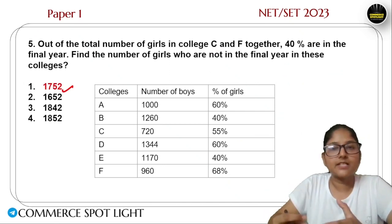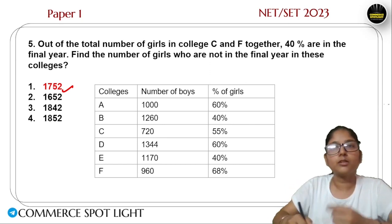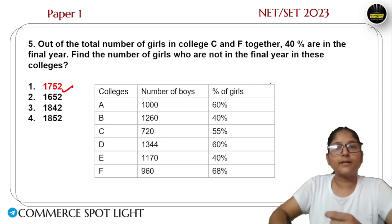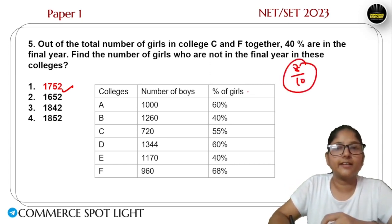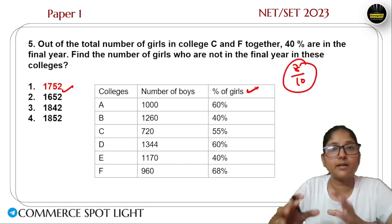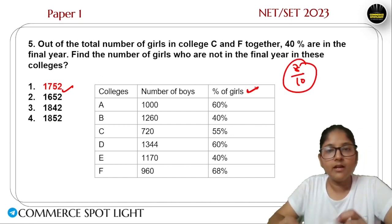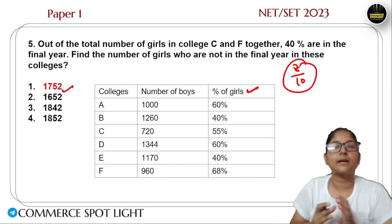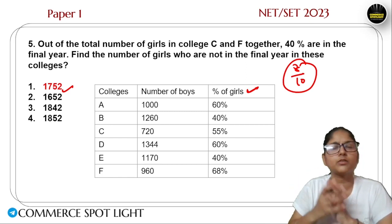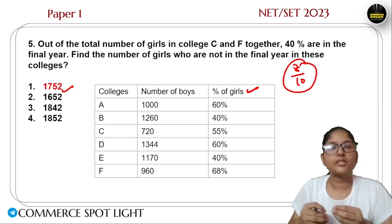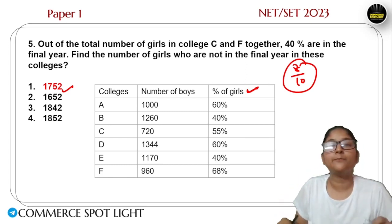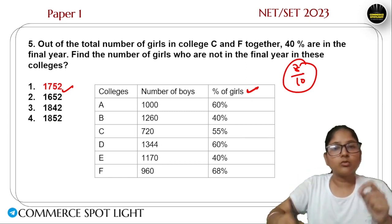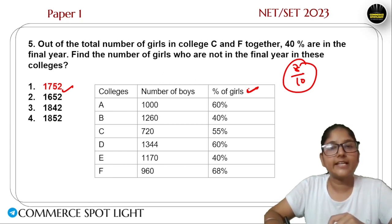If you have 8 questions, you will find the same pattern, so you need to learn this pattern. And whether it is a SET examination, a NET examination, or any other examination in December — DI will be asked. So you need to solve DI in this way. The answer is 1752 and option A is correct.